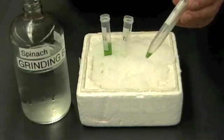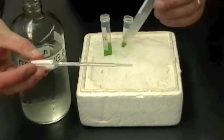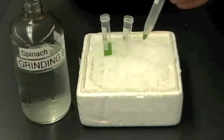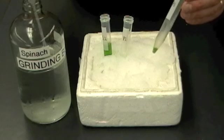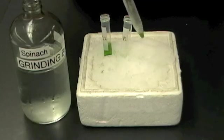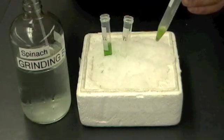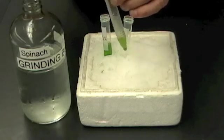So you're going to need to mix this with one and a half milliliters of this grinding buffer. So you can just use these pipettes. They're marked here with the amounts of milliliters on there. So I'm going to put one and a half mils of that in there.